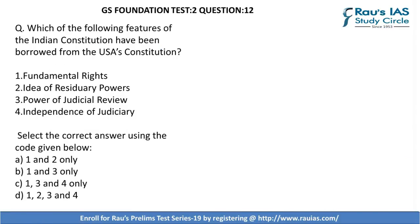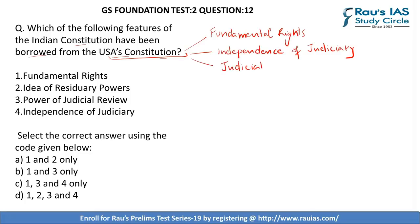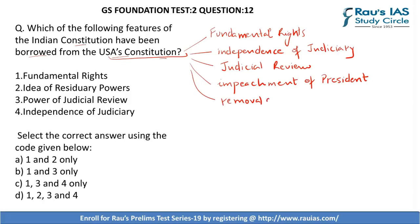Question 12 asks: which of the following features of the Indian Constitution have been borrowed from the USA's Constitution? The Indian Constitution has been inspired by constitutions of various countries. Features borrowed from the American Constitution include: fundamental rights, independence of judiciary, the concept of judicial review, impeachment of the president, removal of Supreme Court and High Court judges, and the post of Vice President.